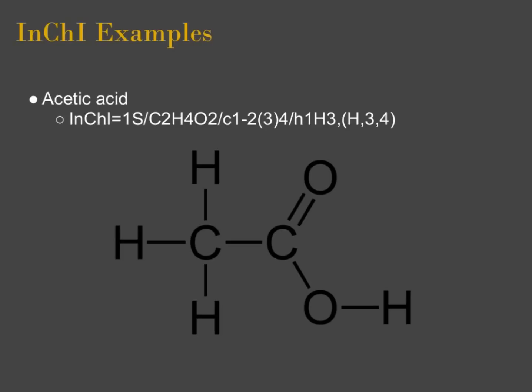Once we have our basic structure, we can add the hydrogens in the hydrogen layer. The 'H' indicates the hydrogen layer. Atom 1 — the first carbon — has H3, meaning three hydrogens on that carbon, which you can confirm in the diagram. The next section says that atoms 3 and 4 — the oxygens — will also have a hydrogen. The double bond between the oxygen and carbon satisfies the valence electrons of those two atoms, and then we have that dangling hydrogen off of the last oxygen. So: 1S, the chemical formula, the connections layer, and then the hydrogen layer.